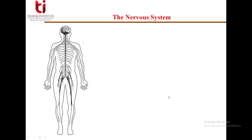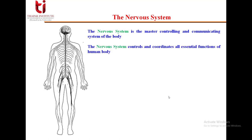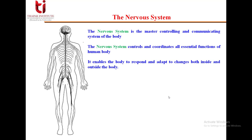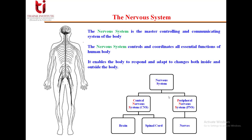The nervous system is the master controlling and communicating system of the body. It controls and coordinates all essential functions of the human body. It enables our body to respond and adapt to changes both inside and outside the body.